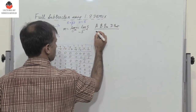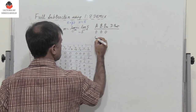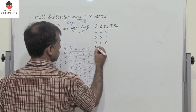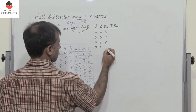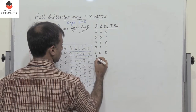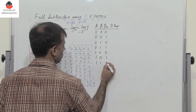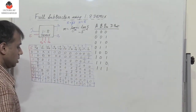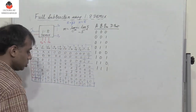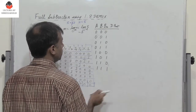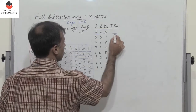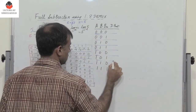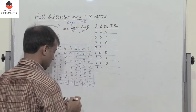There are 8 combinations for the inputs A, B, and Bin: 0,0,0 then 0,0,1 then 0,1,0 then 0,1,1 then 1,0,0 then 1,0,1 then 1,1,0 and finally 1,1,1. We now compute the difference and borrow out for each combination.